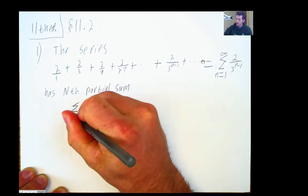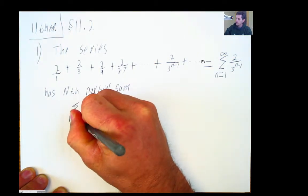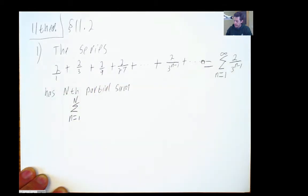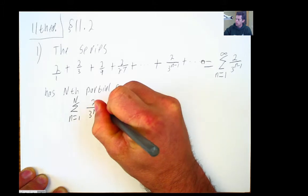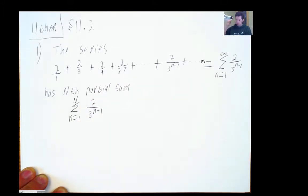Sum from lowercase n is 1 to capital N, 2 over 3 to the n minus 1. Now, I'm supposed to find a formula for this. That seems to be a formula right there, but I think what the authors have in mind is perhaps something simpler than that.